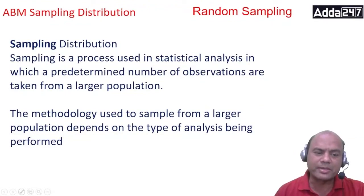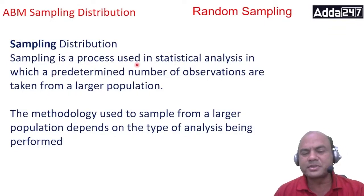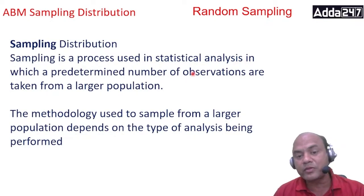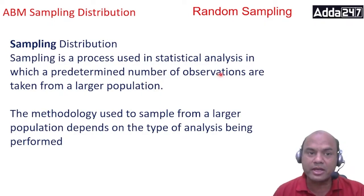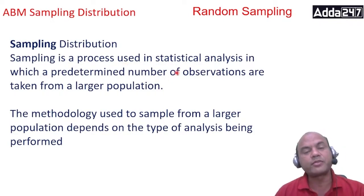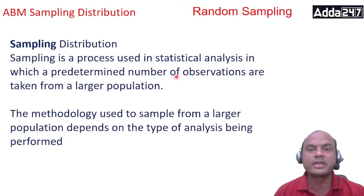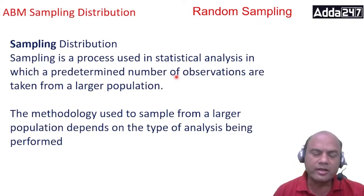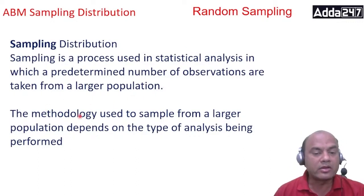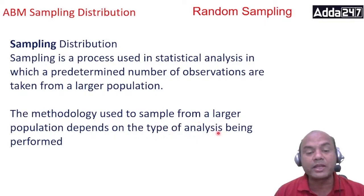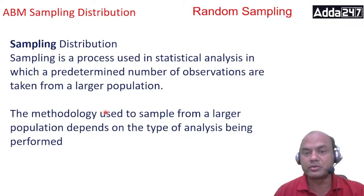Firstly, sampling distribution — what is sampling distribution? Sampling distribution is a process used in statistical analysis in which a predetermined number of observations are taken from the larger population. The important word here is 'predetermined number of observations.' I must know how many samples I have to take beforehand; otherwise the sampling process won't end. So you must first decide where to stop. The methodology used to sample from a larger population depends on the type of analysis being performed — this means what type of sampling should I do, such as random sampling and various other types.